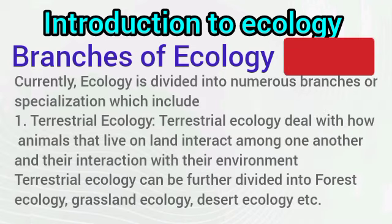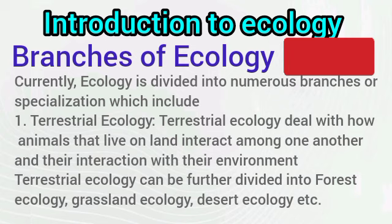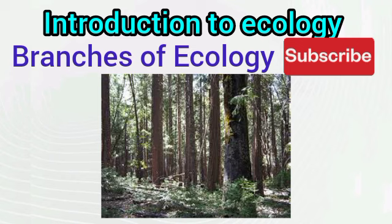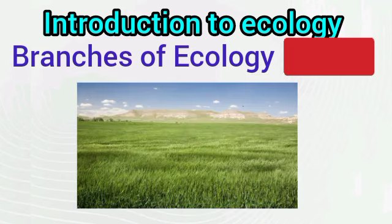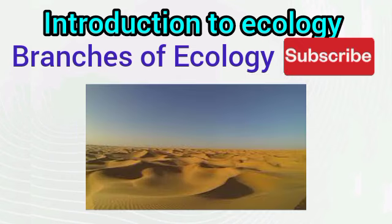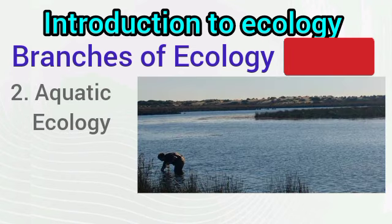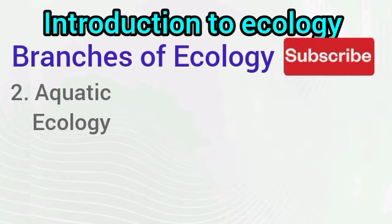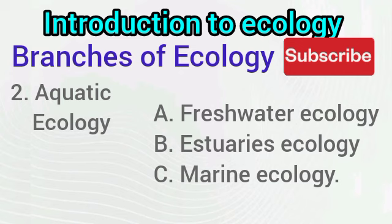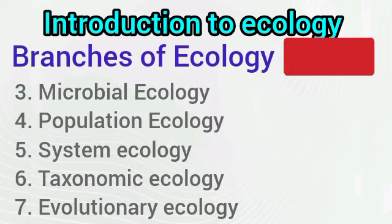Currently, ecology is divided into numerous branches or areas of specialization, which include terrestrial ecology — studying ecology on land — which can be divided into forest ecology, grassland ecology, or desert ecology. We also have aquatic ecology as a branch, further divided into freshwater ecology, estuarine ecology, and marine ecology.